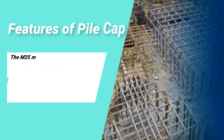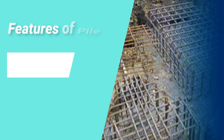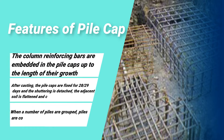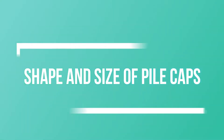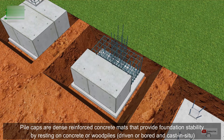Features of pile cap: the M25 mix is the minimal concrete grade that can be used to make piles and pile caps. A full pile cap can be fitted intact for minor piles such as two to three piles; casting is done in layers for larger pile caps. The column reinforcing bars are embedded in the pile caps up to the length of their development. After casting, the pile caps are cured for 28 days and the shuttering is detached. The adjacent soil is flattened and compacted using a compactor. When a number of piles are grouped, piles are constructed like a raft.